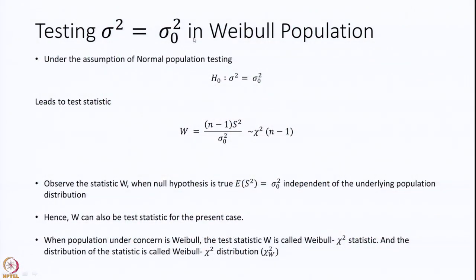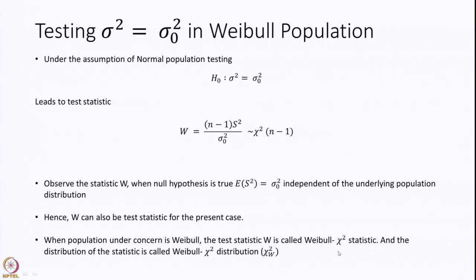Now, suppose we want to test sigma square is equal to sigma naught square. Under a normal population, the test statistic W is (n minus 1) S square over sigma 0 square, which is chi-square with n minus 1 degrees of freedom. Just as in the previous case of testing mu is equal to mu 0, we observe that the expected value of S square is sigma square independent of the underlying population — it need not be normal. Hence, W can also be a test statistic for the present case, and when the population is Weibull, such a statistic is called a Weibull chi-square statistic and the distribution is called Weibull chi-square distribution.